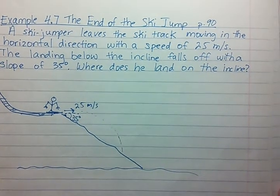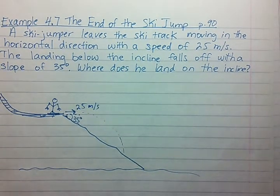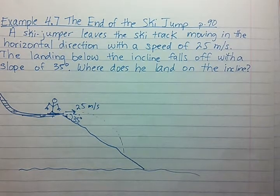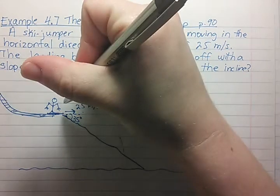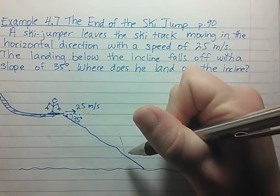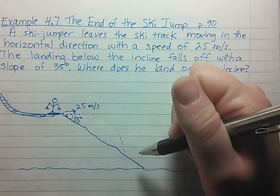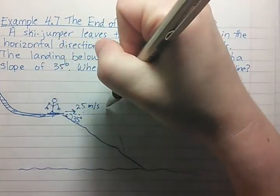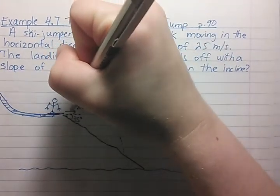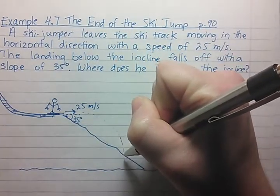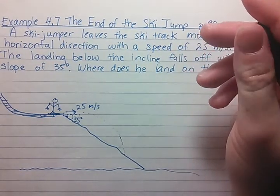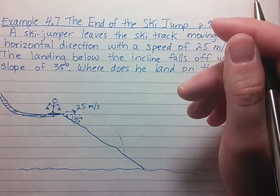This is a horizontally launched projectile but a more complicated one. Normally we would solve this problem by figuring out how long it takes the skier to reach the ground and then solve for the horizontal direction. However, how far he goes in the horizontal direction will influence how far down on the slope he lands. So we have more unknowns than we normally have in this type of problem.